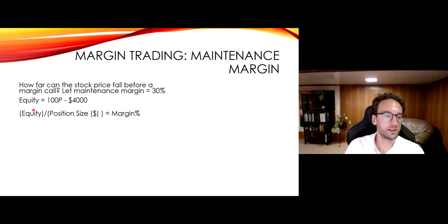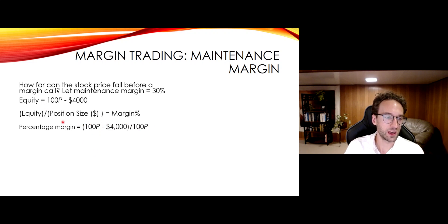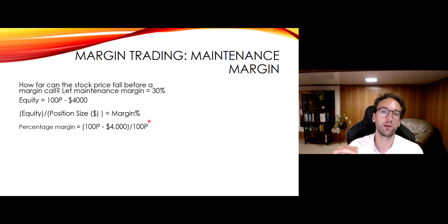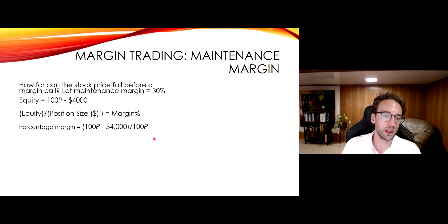Your margin percentage is equity divided by position size. What's your position size? It's 100 shares times the price of the stock. So we insert that and get: percentage margin equals 100P minus $4,000, divided by 100P — the size of the position. If you think of this from an accounting perspective, you usually will not go wrong. Think about how you would calculate your equity — assets minus liability — then calculate percentage margin. To finish this problem, we plug in 30%, which is when a margin call would trigger, and solve for P.